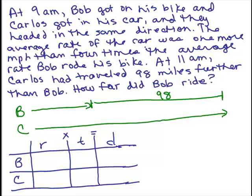What do we know about their rates? It doesn't tell us exactly what either of their rates are, but we do know that the car's average was one more mile per hour than four times the average rate Bob rode. So let's call Bob's rate X. Then Carlos is one more than four times that, so 4X plus 1.